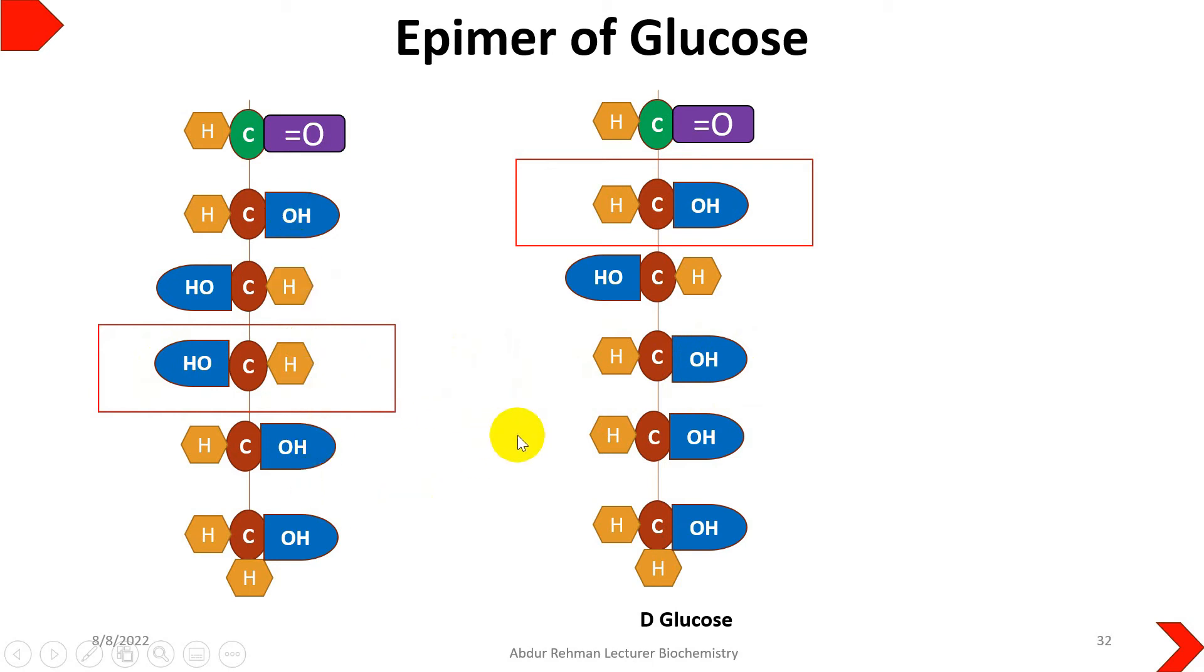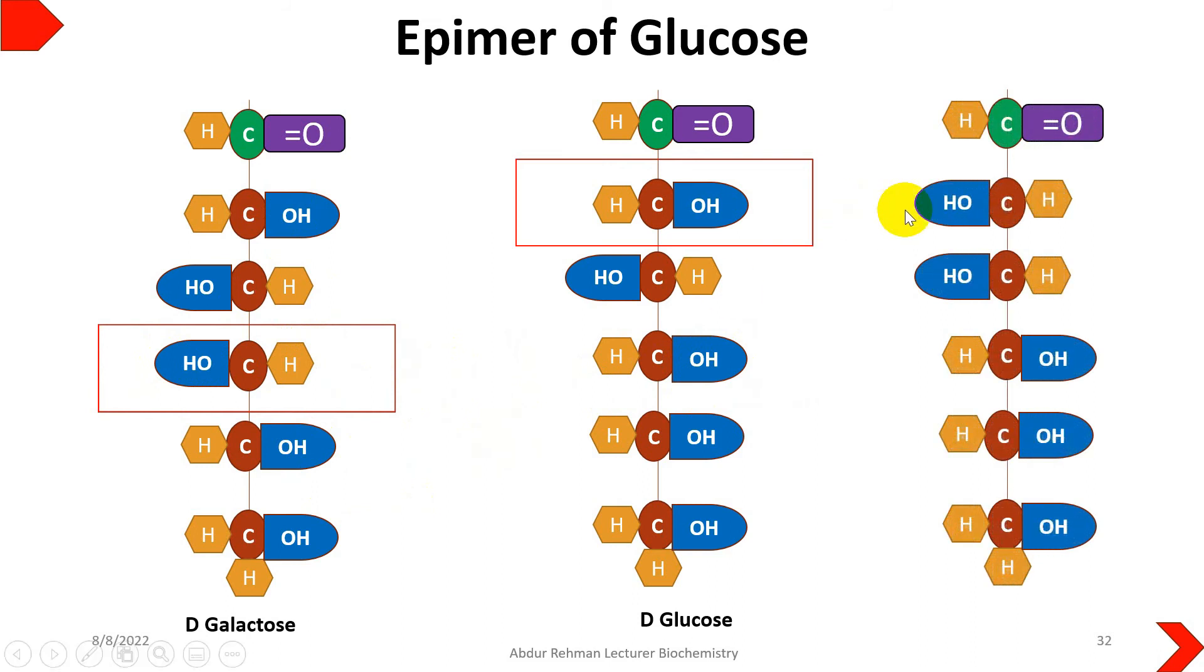Similarly, mannose is an epimer of glucose at carbon two position because the hydroxyl configuration is changed at carbon number two in mannose. This interconversion between epimers, such as from glucose to galactose, is known as epimerization and this job is done by epimerase enzymes.